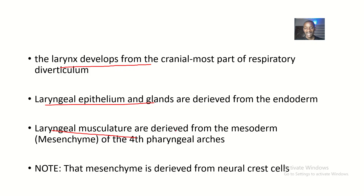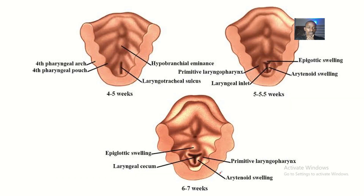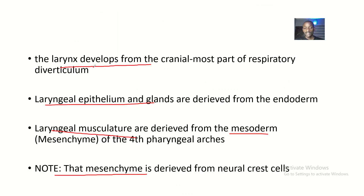You should note that the mesenchyme of the fourth pharyngeal arches is derived from neural crest cells. So the muscles of the larynx develop from the fourth pharyngeal arches, the epithelium is derived from the endoderm, and the larynx itself is derived from the cranial-most part of the respiratory diverticulum.